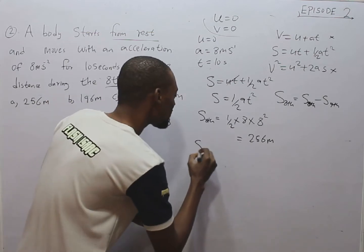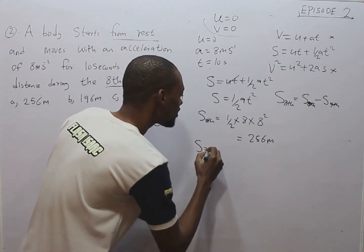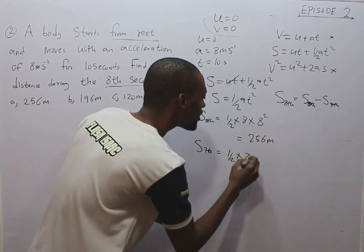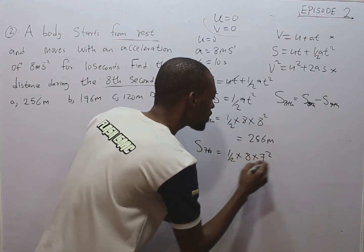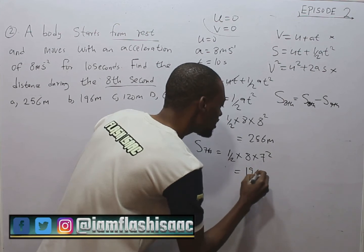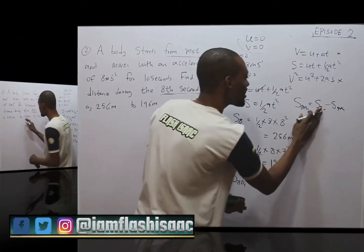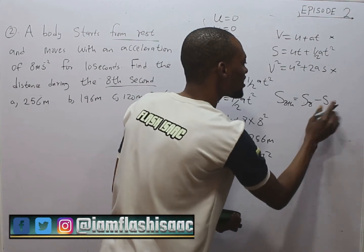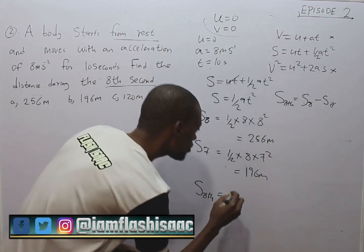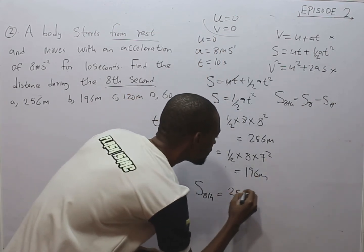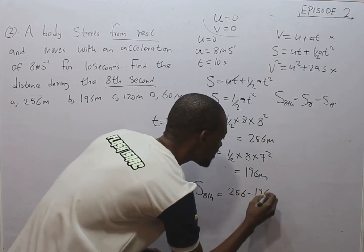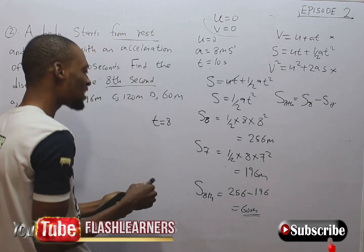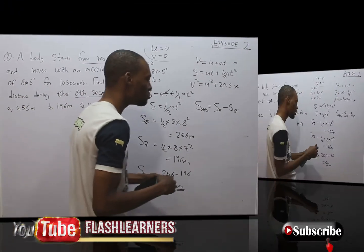Now, for S in 7 seconds, S₇ equals one-half times 8 times 7 squared, which gives 196 meters. So the distance during the 8th second equals S₈ minus S₇, which is 256 minus 196, giving you 60 meters. So the distance covered during the 8th second is 60 meters.